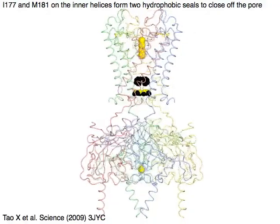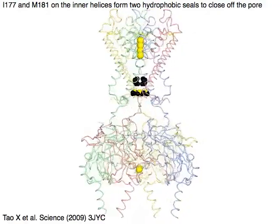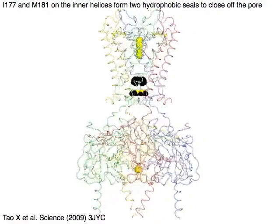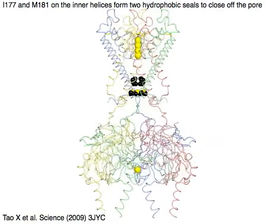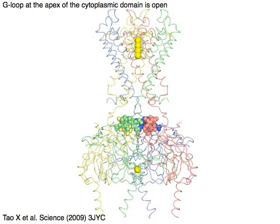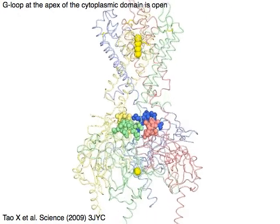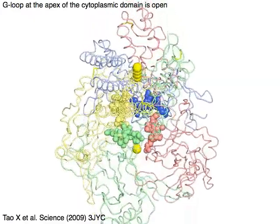Isoleucine 177 and methionine 181 on the inner helices form two hydrophobic seals to close off the pore. The G-loop at the apex of the cytoplasmic domain is open.